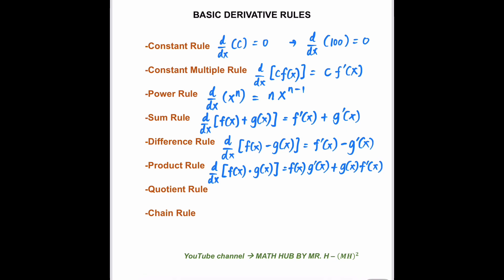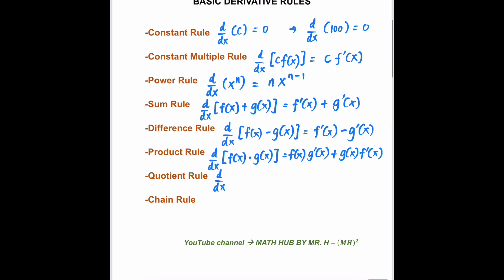The next rule is what we call the quotient rule: finding the derivative of f(x) divided by g(x). That's going to be equal to g(x) times the derivative of f(x), which is f prime of x, minus f(x) times the derivative of g(x), which is g prime of x, divided by the square of g(x).